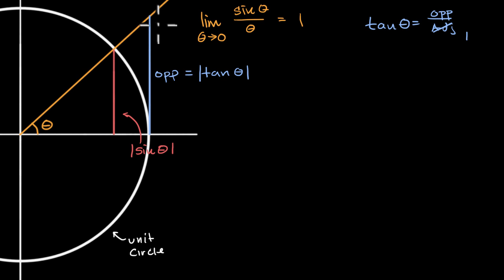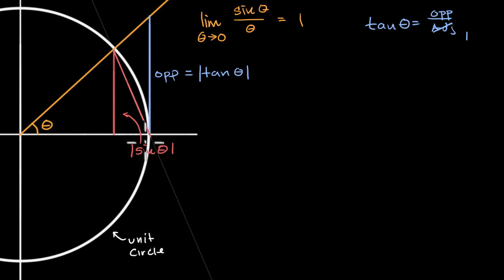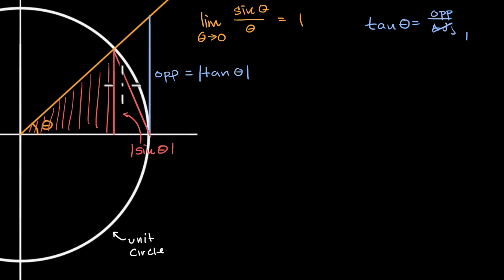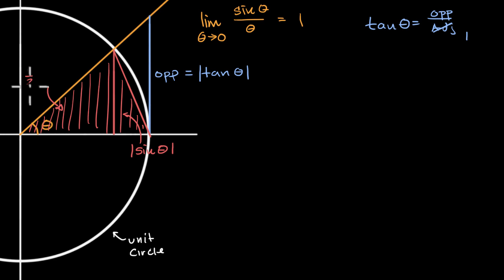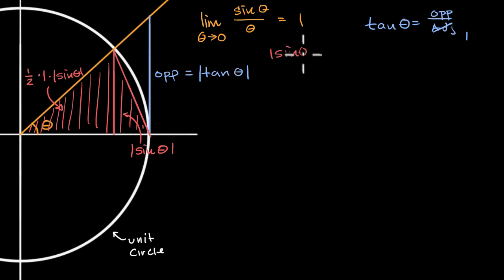Now I'm going to think about some triangles and their respective areas. First, I'll draw a triangle that sits in this wedge — this pie slice within the circle. The area of this triangle is one half base times height. The height is |sin θ| and the base is one, so the area equals |sin θ| / 2.